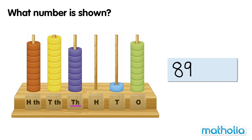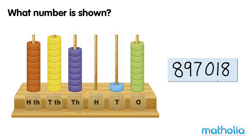In the 1,000s place, there are seven beads. In the 100s place, there are zero beads. In the 10s place, there is one bead. And in the 1s place, there are eight beads. The number shown on the place value abacus is 897,018.